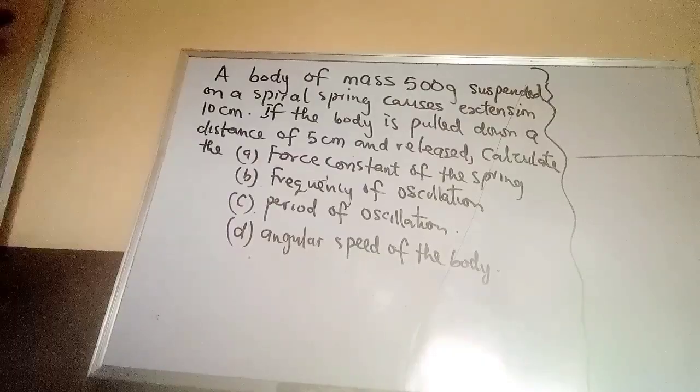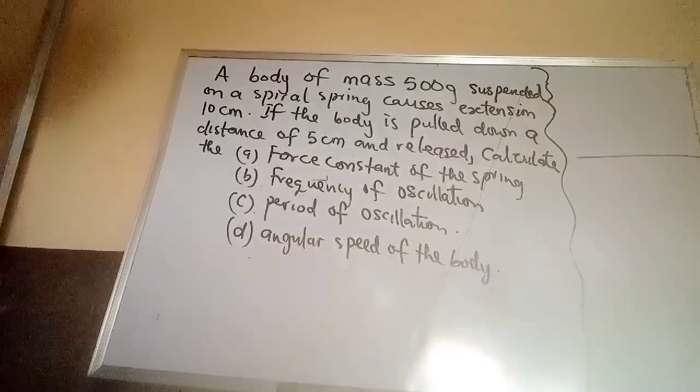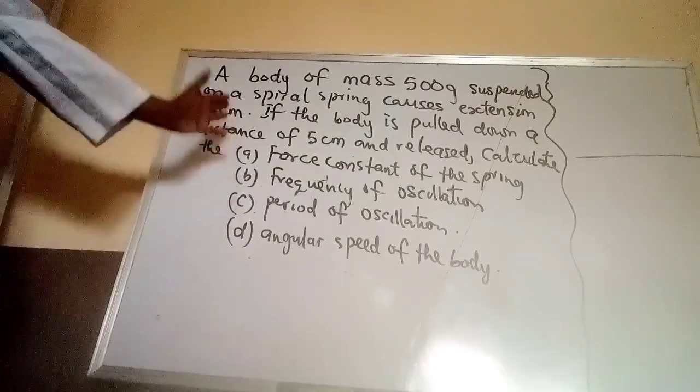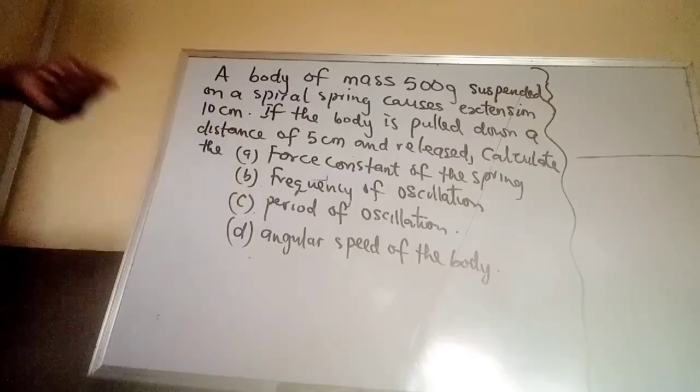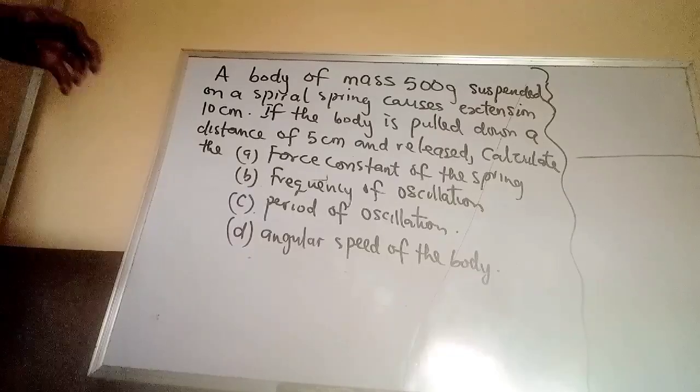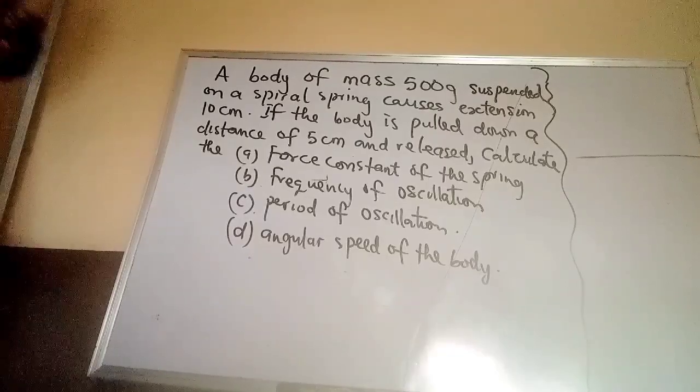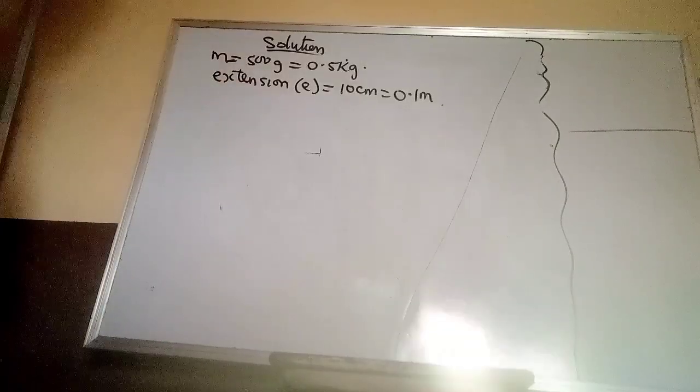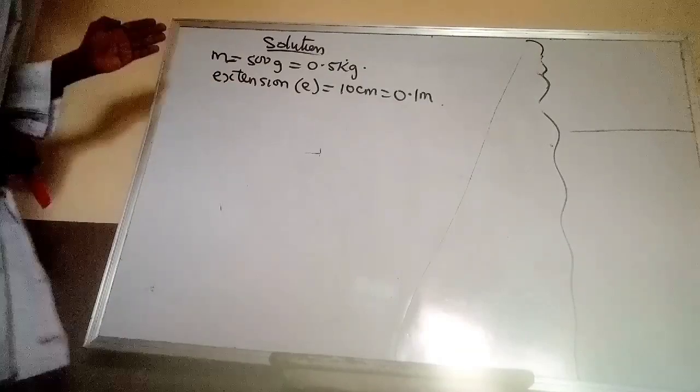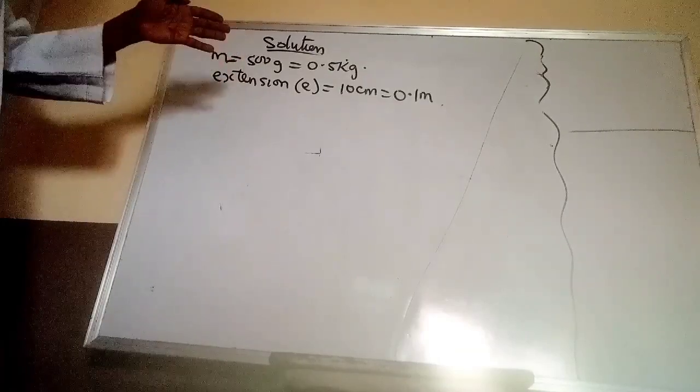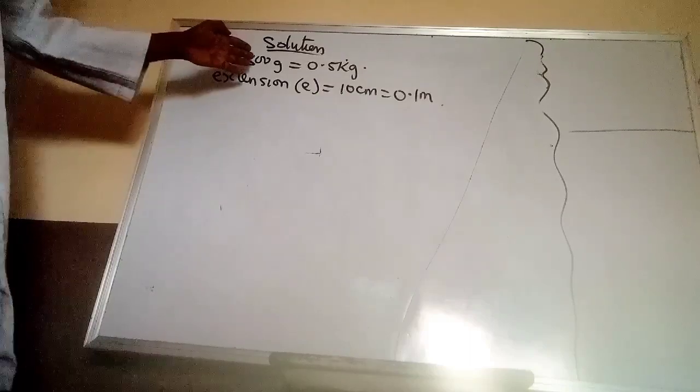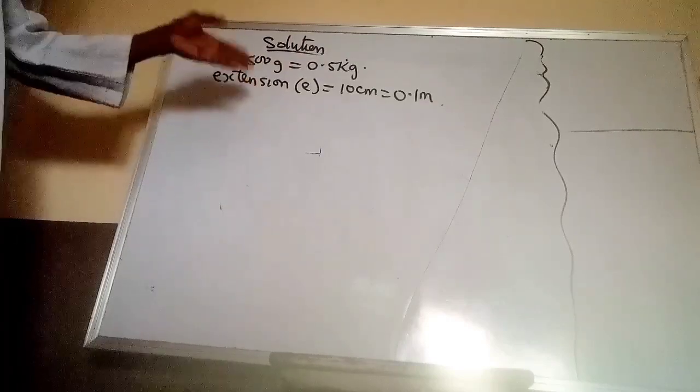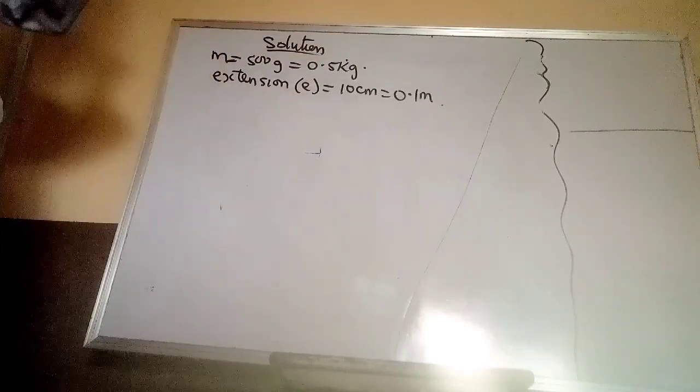According to the question, the elastic body is a spiral spring and we are asked to find the following questions on it. I will pause the video for you to have a trial of the question. Alright, we are given the mass of the body to be 0.5 kilograms after conversion. It's 500 grams you divide by 1000 to get 0.5 and the extension is 10 centimeter divided by 100 that will give you 0.1 meters.